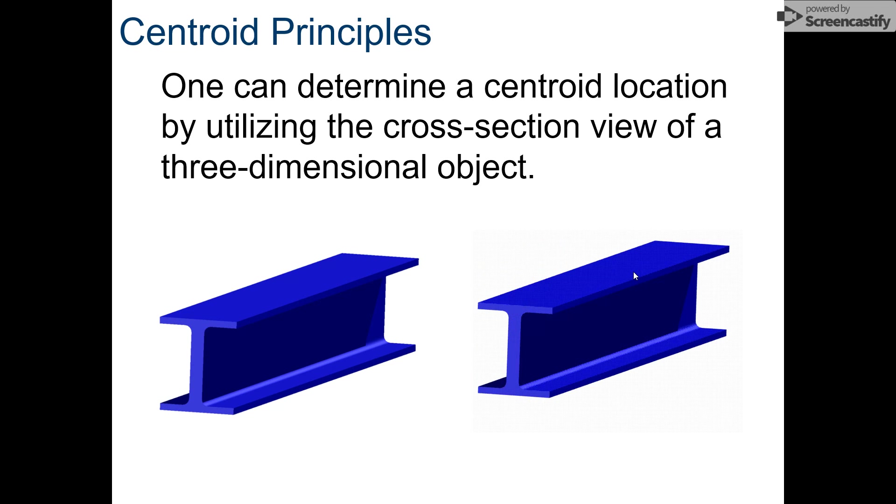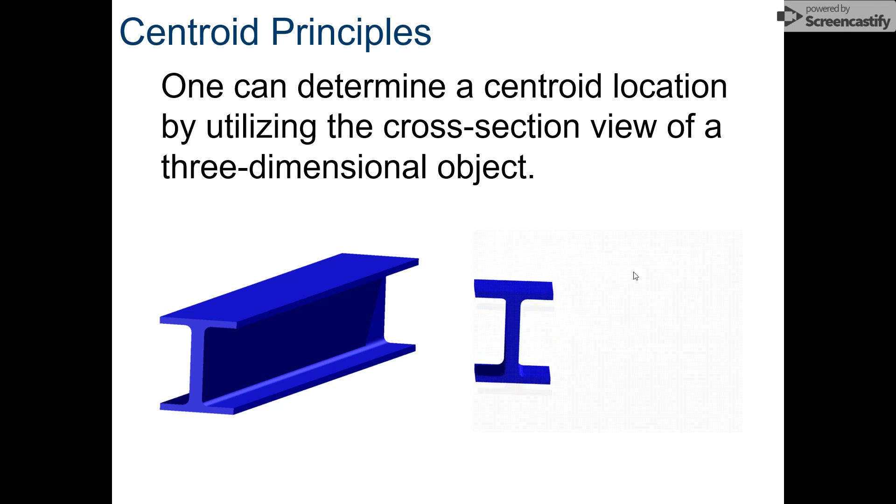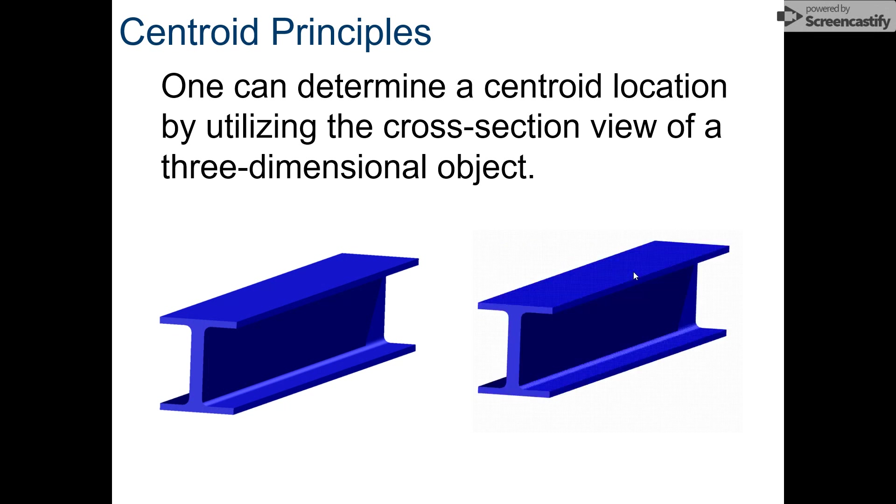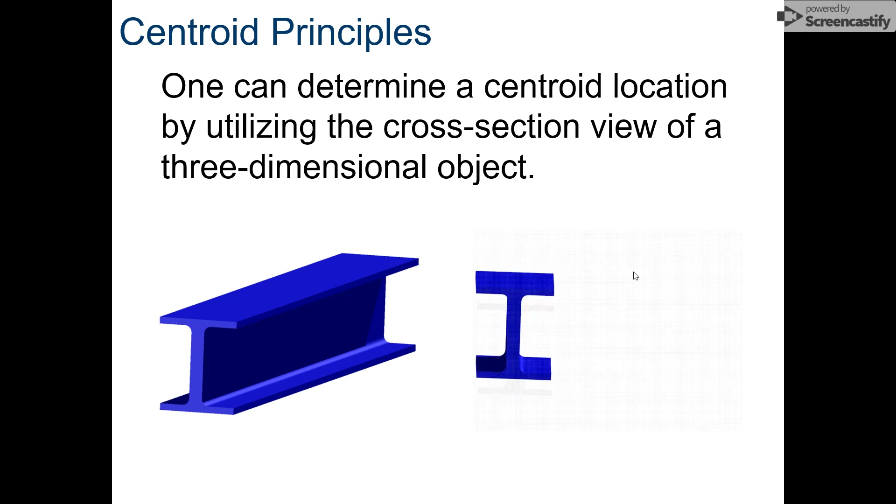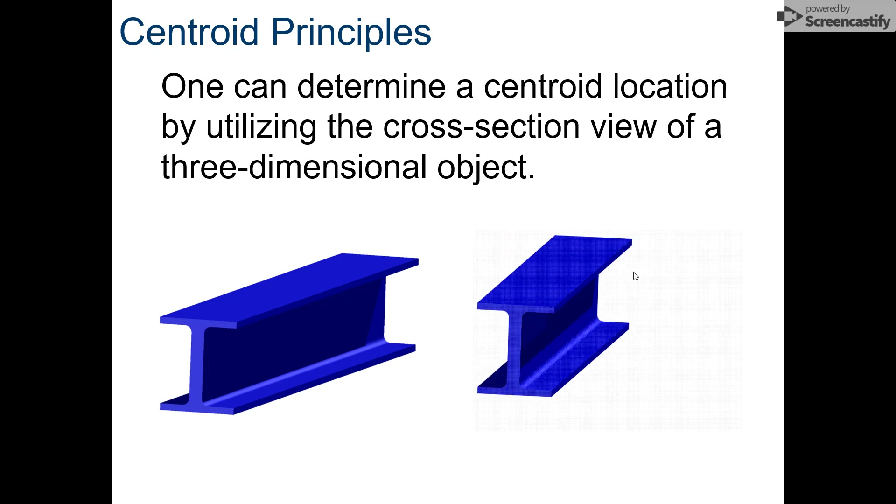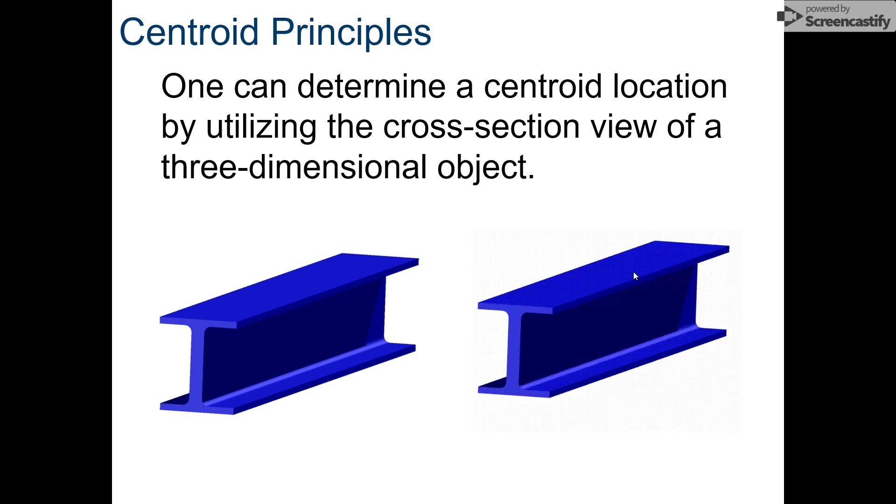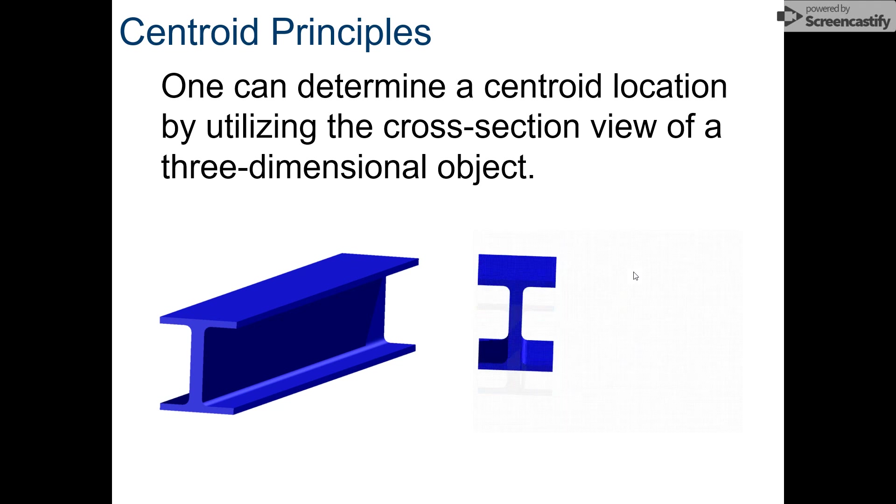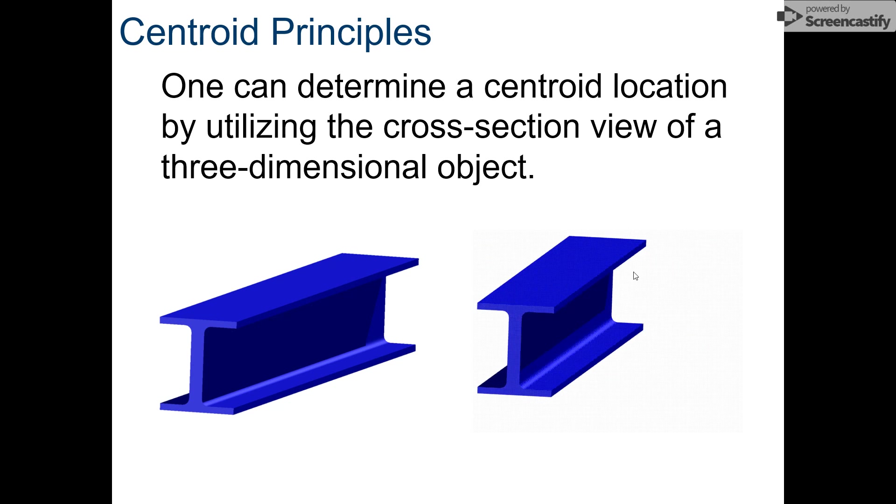The centroid is determined by using a cross-sectional view of a three-dimensional object. On the left you see an I-beam, on the right they're turning it to look at its end, and that shape is called the cross-section. So a cross-section of an I-beam looks like the letter I.